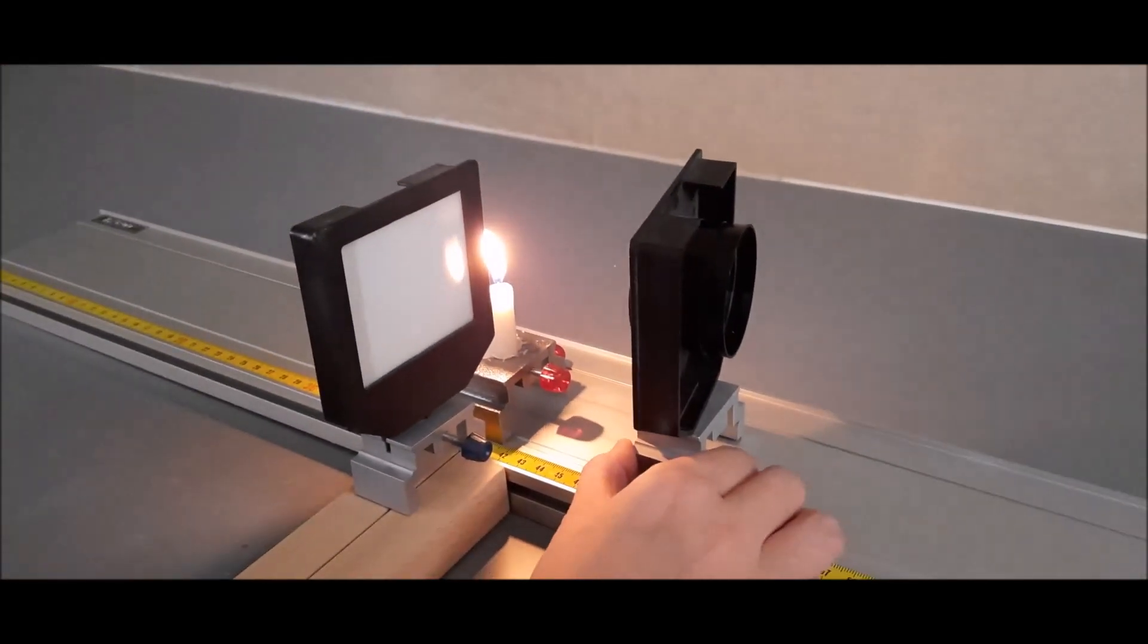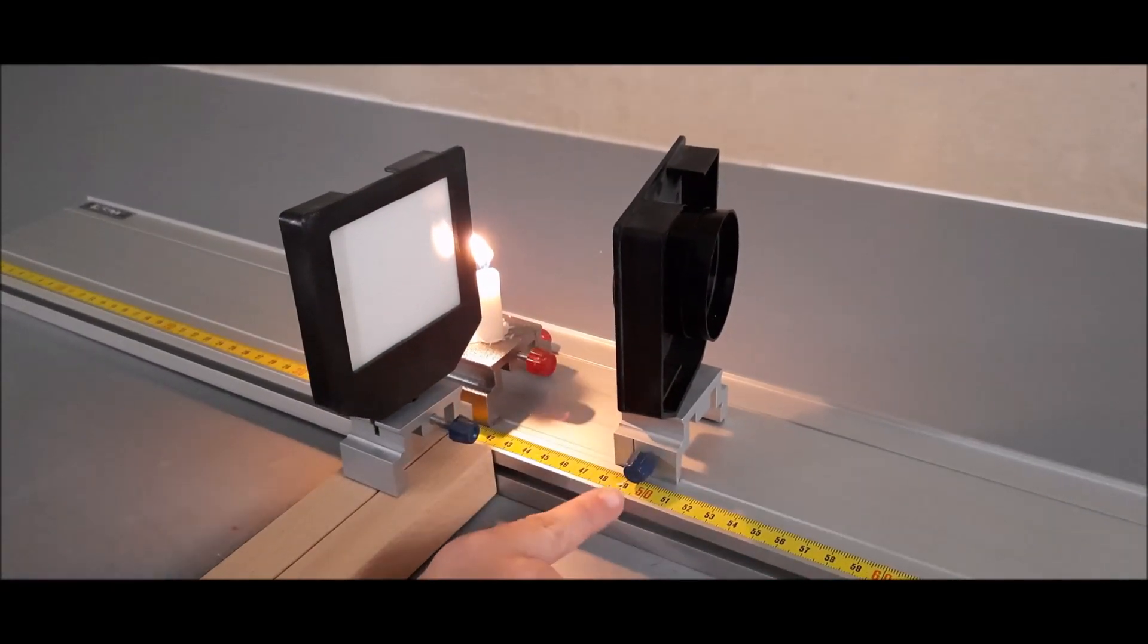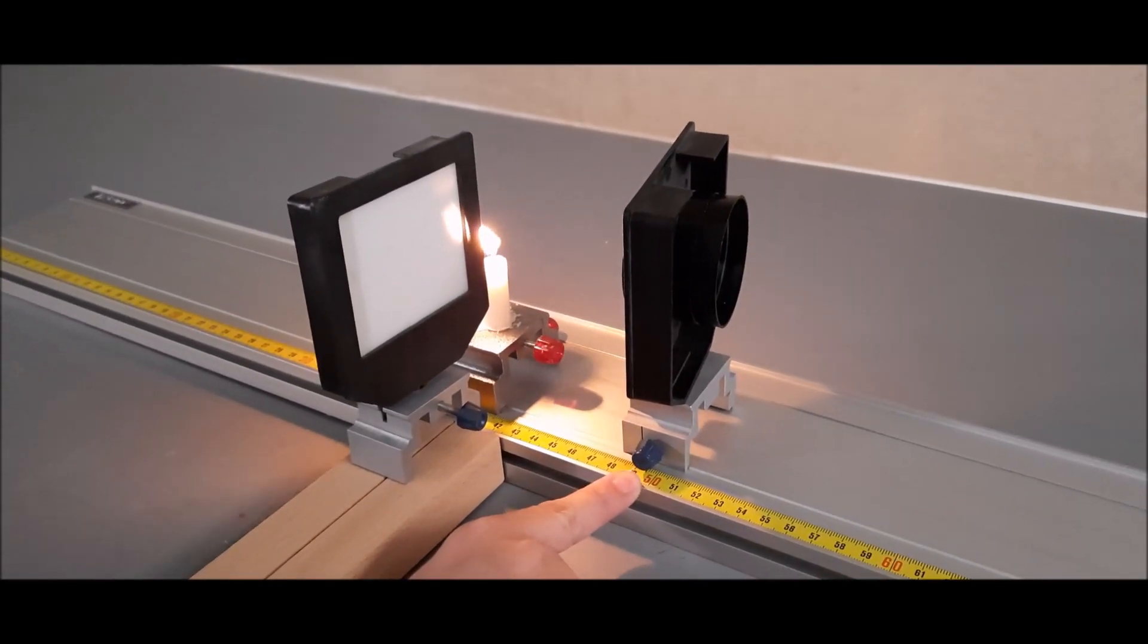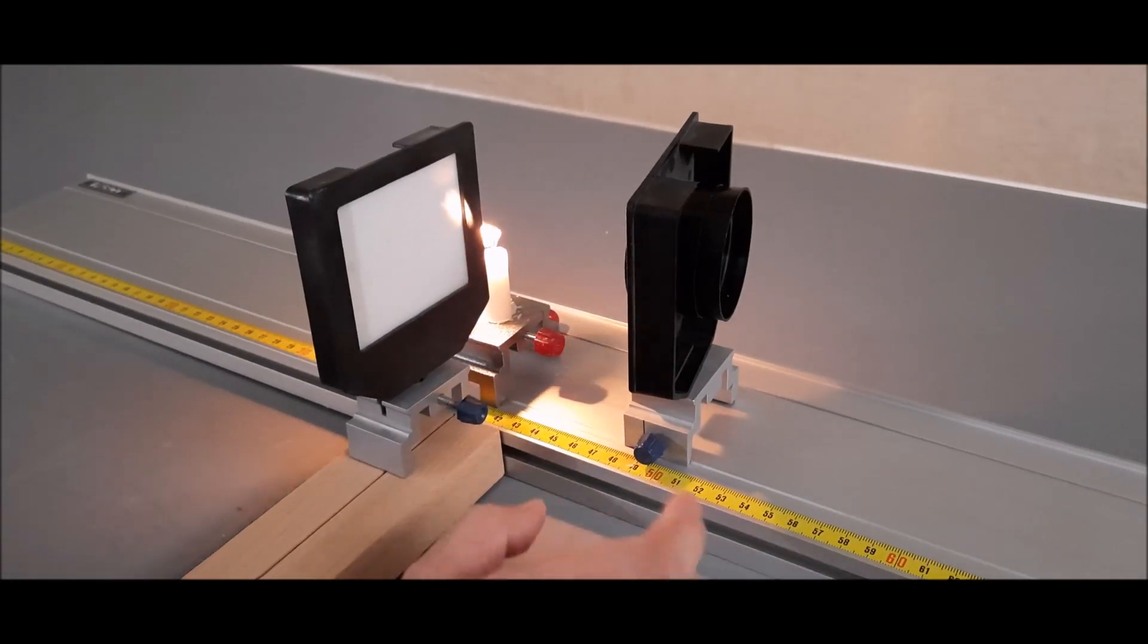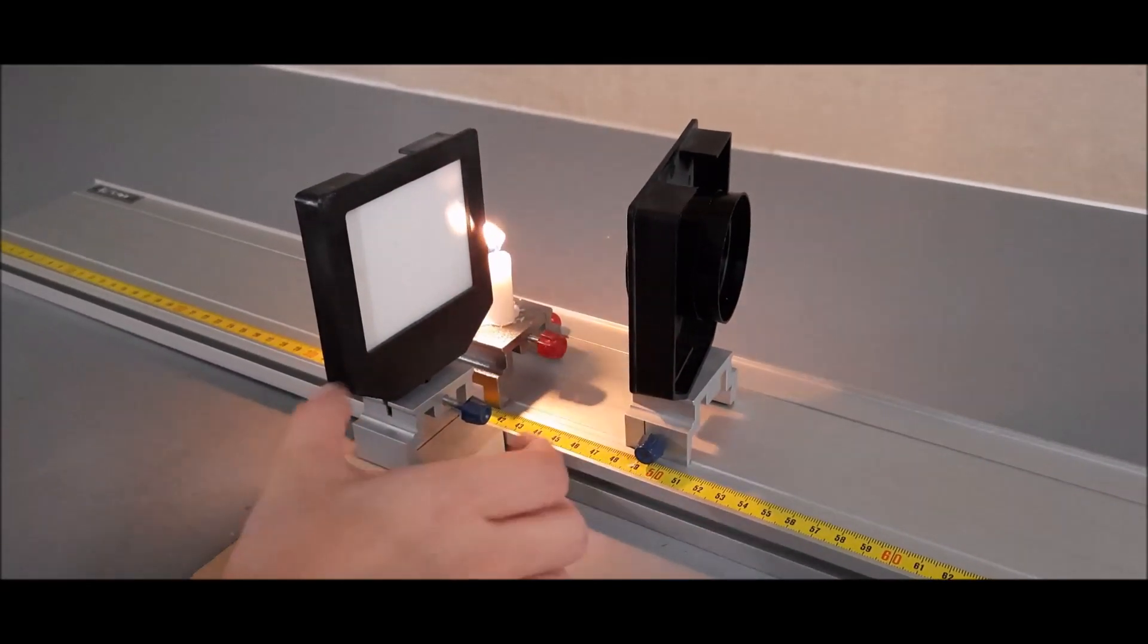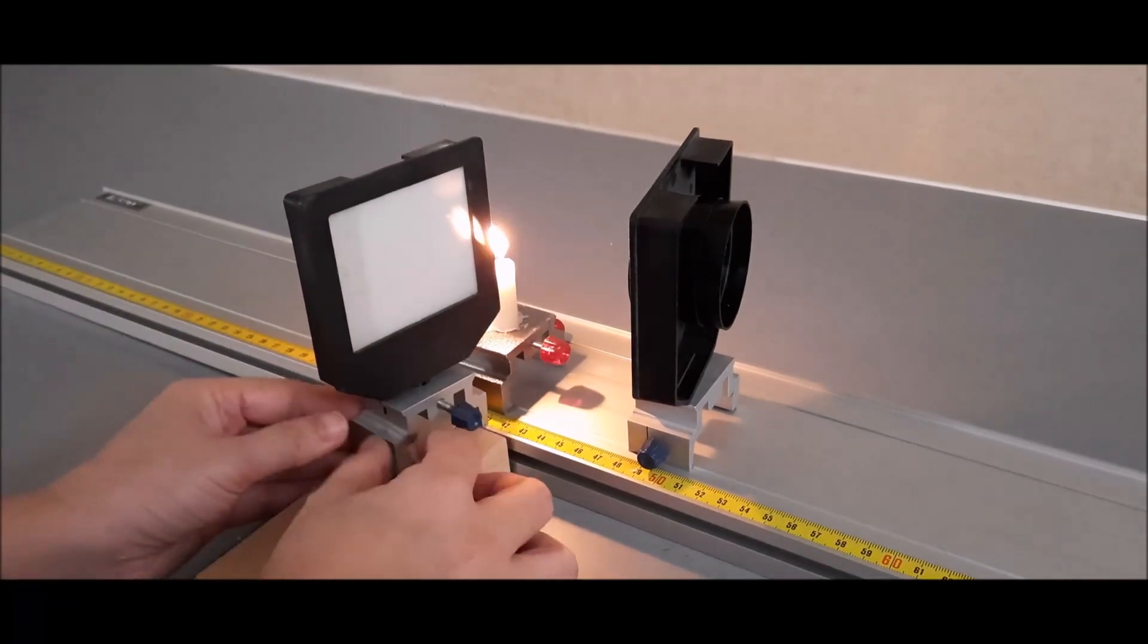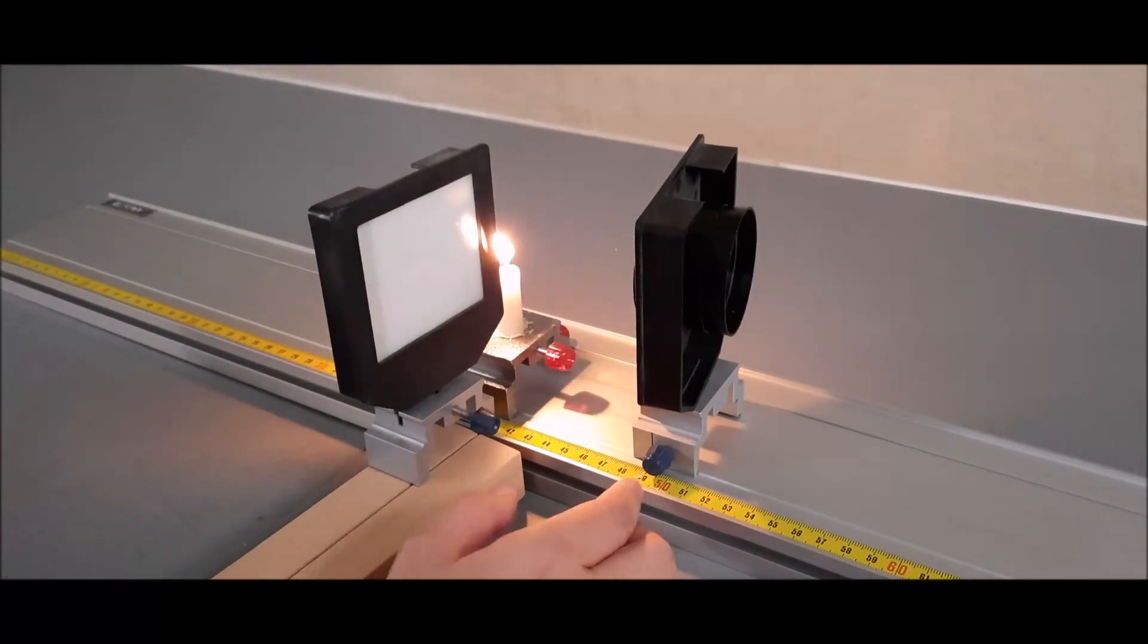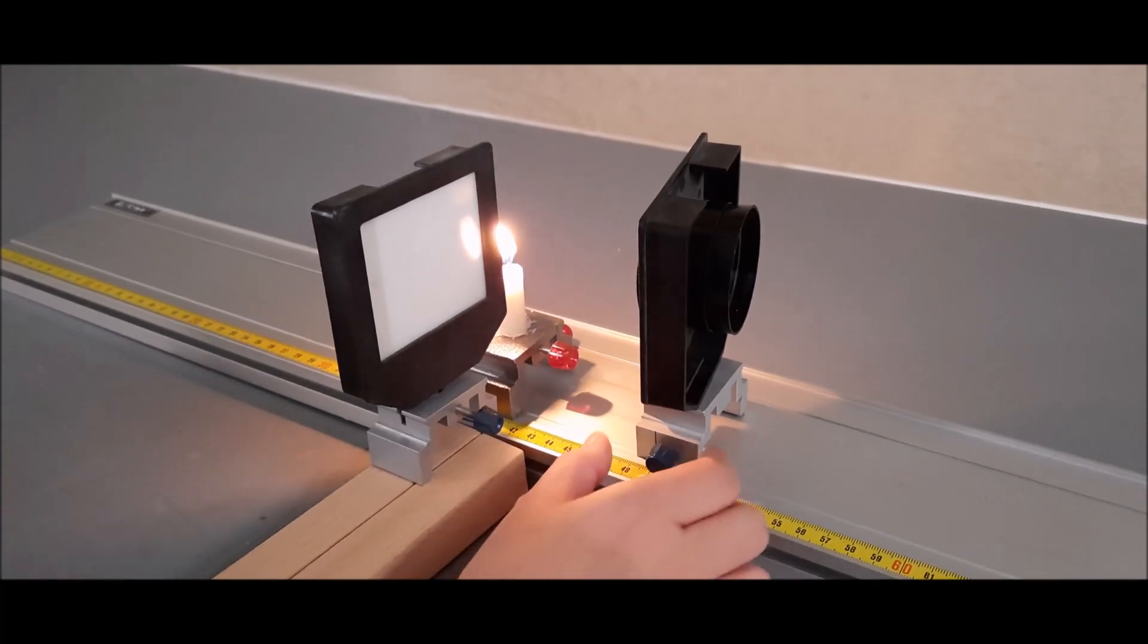Now we get the sharp image at 50 cm mark. Therefore, the center of curvature is 50 minus 40, that is 10 cm, and half of it is the focal length which is 5 cm.